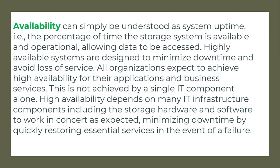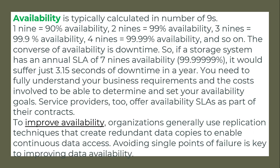High availability depends on many IT infrastructure components — including storage, hardware, and software — working in concert. Availability is typically calculated in terms of nines: 1.9 equals 90% availability, 2.9 equals 99%, 3.9 equals 99.9%, and 4.9 equals 99.99%. The converse of availability is downtime — for example, a system with 7.9 availability would suffer just 3.15 seconds of downtime per year. Organizations generally use replication techniques to create redundant data copies, enabling continuous data access and avoiding single points of failure.